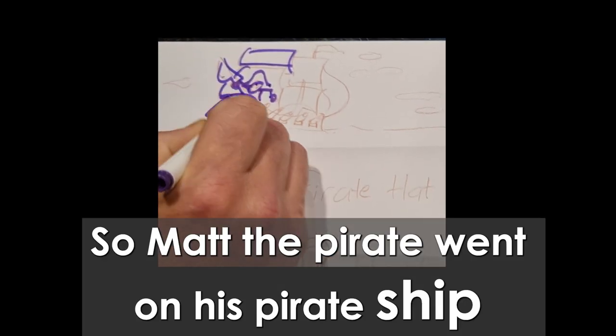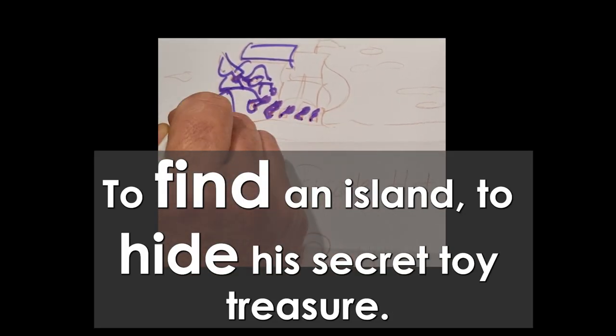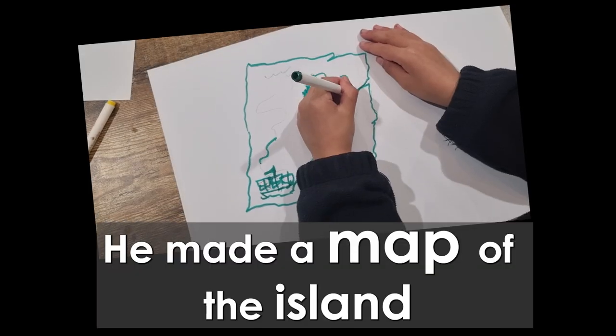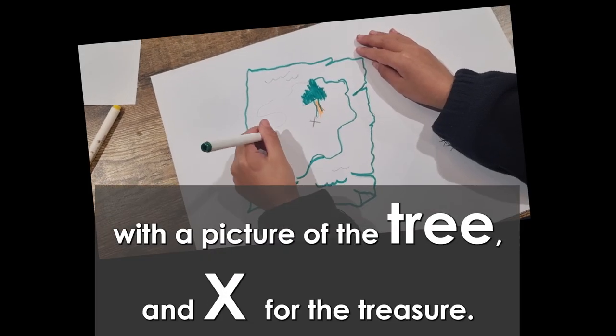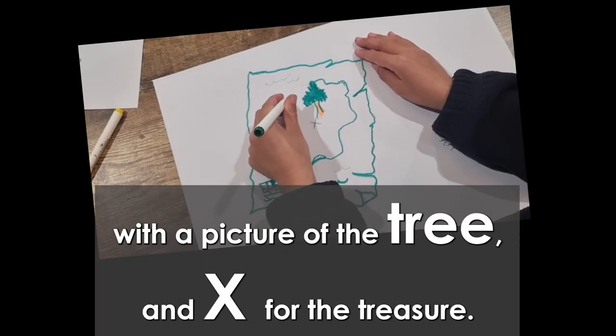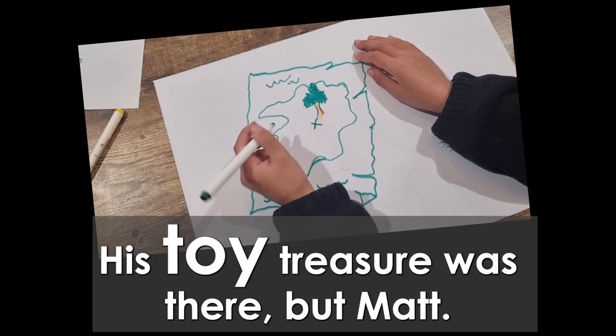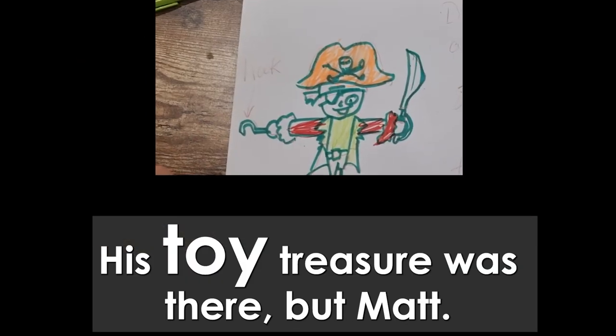So Matt the pirate went on his pirate ship to find the island, to find the secret toy treasure. He made a map of the island with a picture of the tree and an X for the treasure. No one knew his toy treasure was precious.